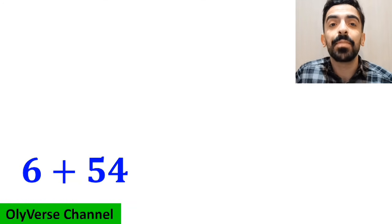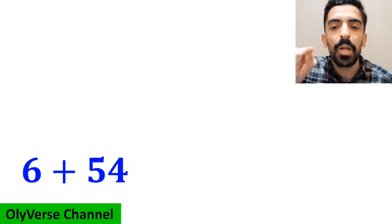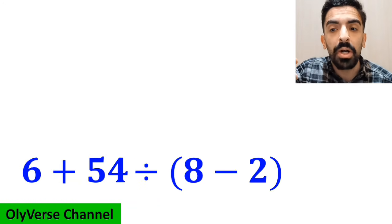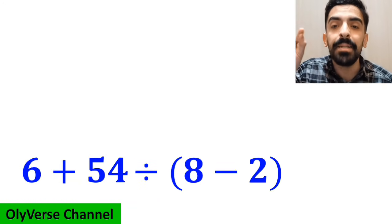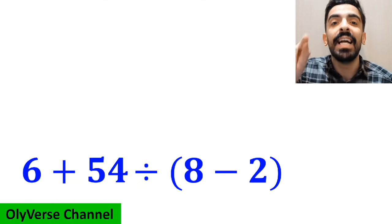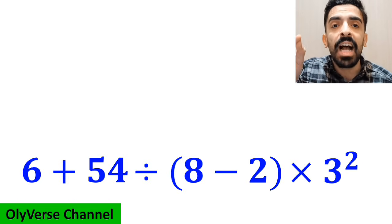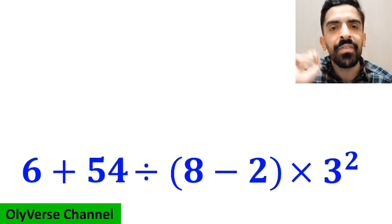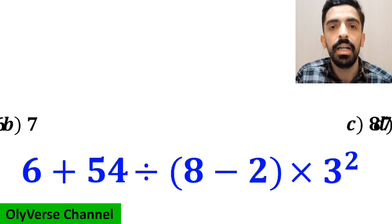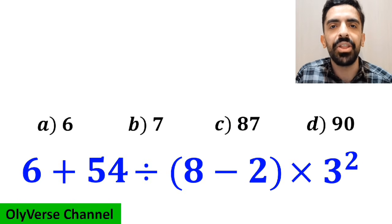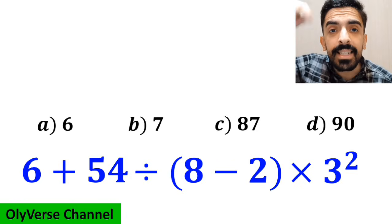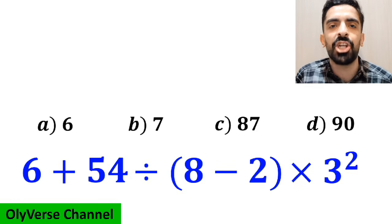What is the value of the expression 6 plus 54 divided by open parenthesis 8 minus 2 close parenthesis, then times 3 to the power of 2? Which option do you think is the correct answer to this question?